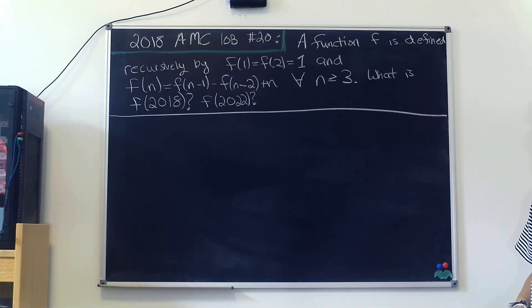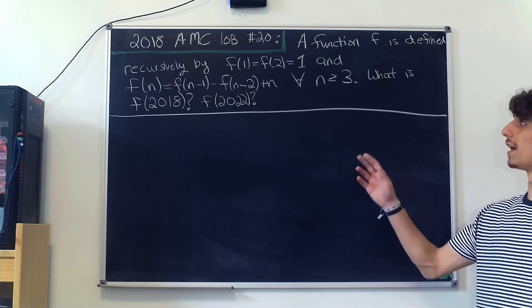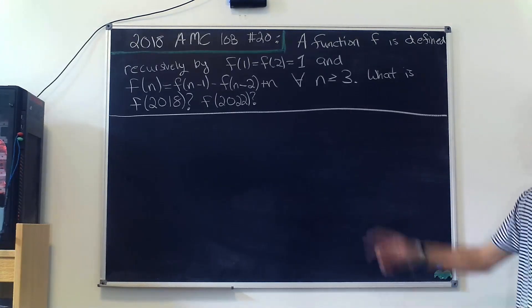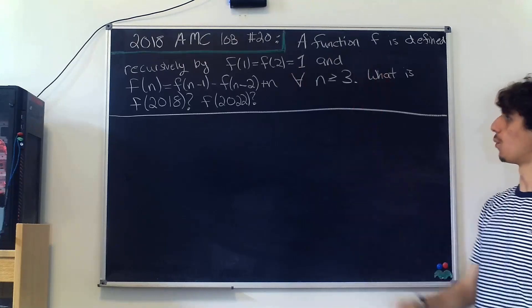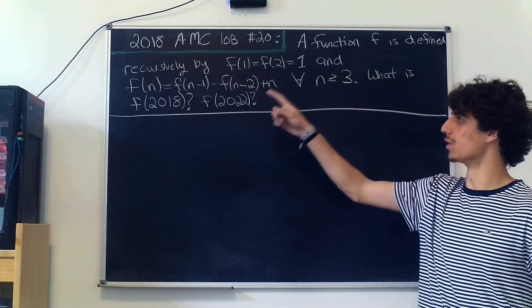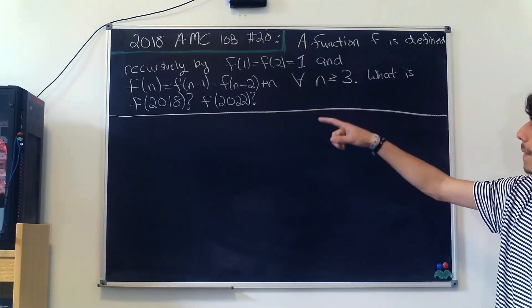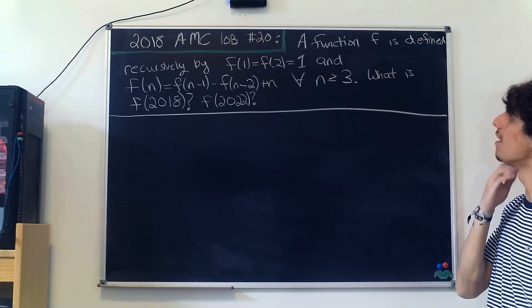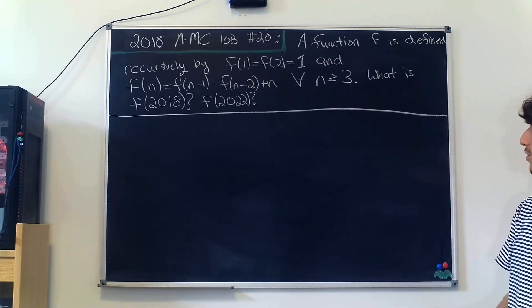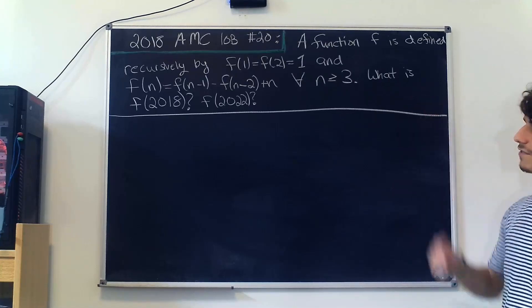A function f is defined recursively by f(1) equals f(2) equals 1, meaning that both f(1) and f(2) are equal to 1, and f(n) equals f(n-1) minus f(n-2) plus n for all n greater than or equal to 3. It asks us to find f(2018).